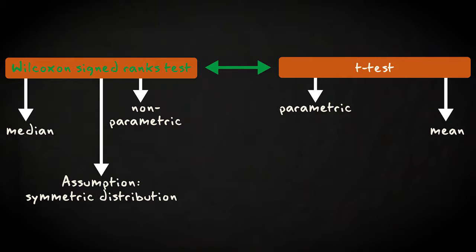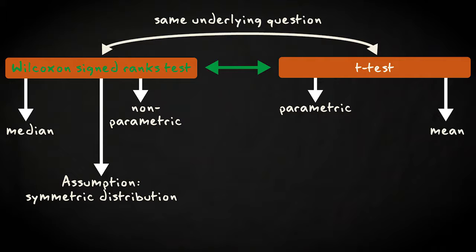Even though the mean and median are different population parameters, the question underlying the signed ranks and t-tests is the same. Are the observations in our sample coming from the assumed theoretical population? A large deviation from the expected mean as well as the expected median would provide similar evidence against the null hypothesis.